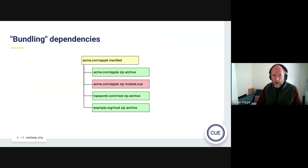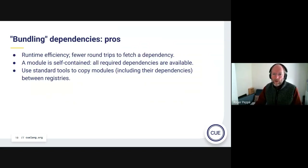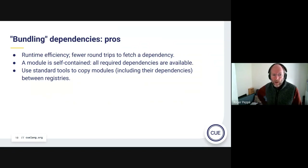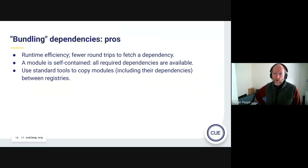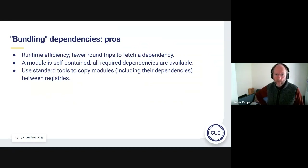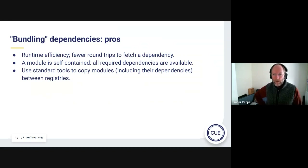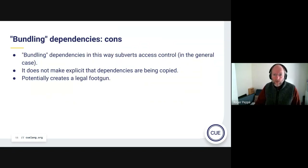There are some advantages to that approach — you get the manifest once and then you can instantly fetch your dependencies. You know all the dependencies are always there available regardless of anything else in the registry. And if you use something like Ociopy to copy a module, it will automatically include its dependencies. So those are some advantages.